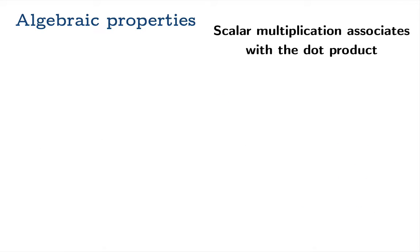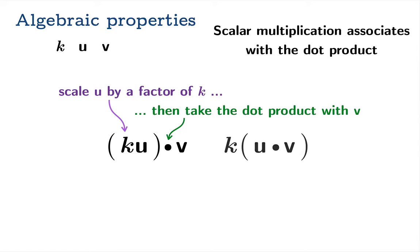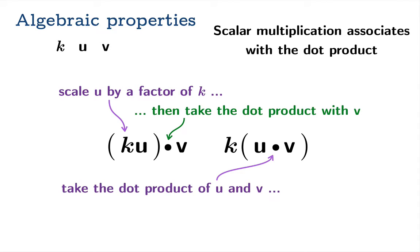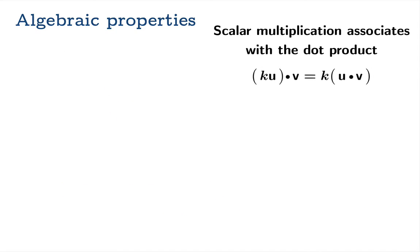The next property: scalar multiplication associates with the dot product. Suppose you have a scalar k and vectors u and v. You could scale u by k and then take the dot product with v, or you could take the dot product of u and v first and then multiply by k. The claim is that you get the same thing either way — you can either scale the vector then take the dot product, or take the dot product and scale the result.